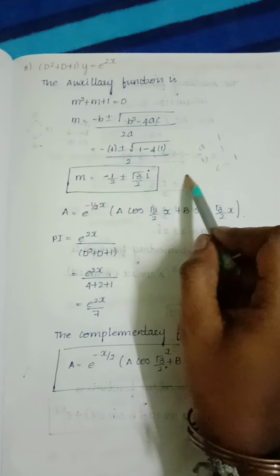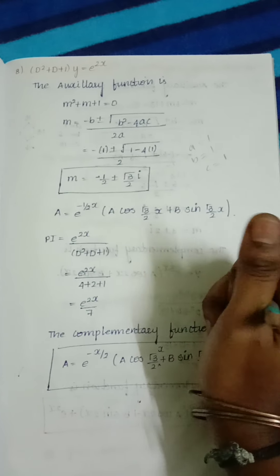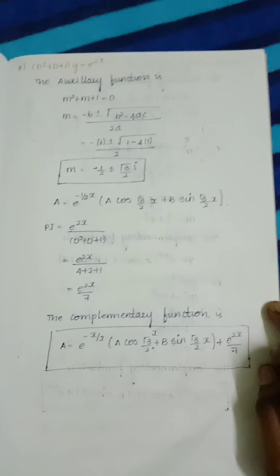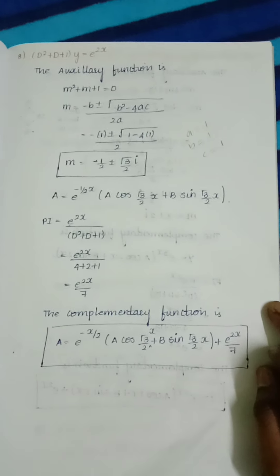This is in the form of alpha plus i beta. The roots are real and imaginary. If it is in the form of alpha plus i beta, we have a formula for finding the complementary function.